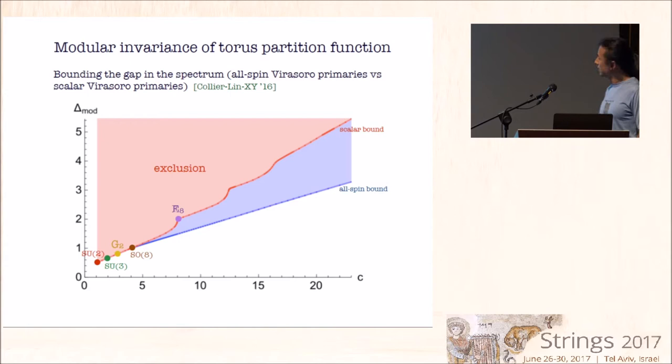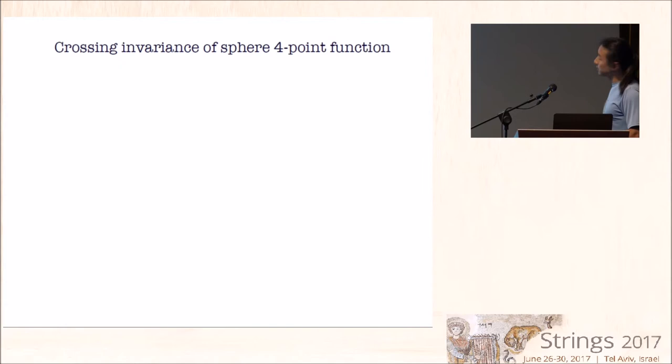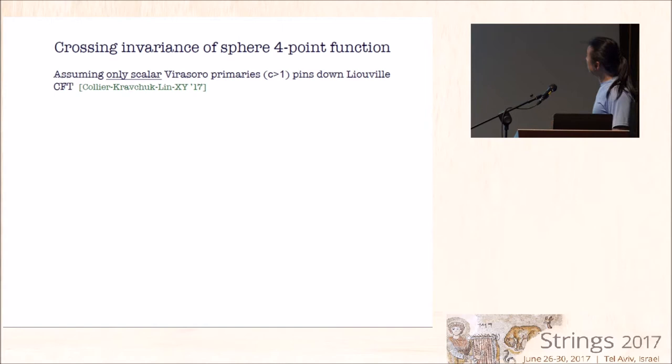Let me recap some things we can do using the crossing symmetry of the sphere four-point function decomposed into Virasoro conformal blocks for general central charge. I'll describe some work very briefly from earlier this year with Scott Collier, Peter Kravchuk, and Yingxuan Lin. If you assume that there are only scalar Virasoro primaries in your theory, which is a huge assumption for c greater than one, it turns out to pin down Liouville theory, at least numerically, that appears to be so.